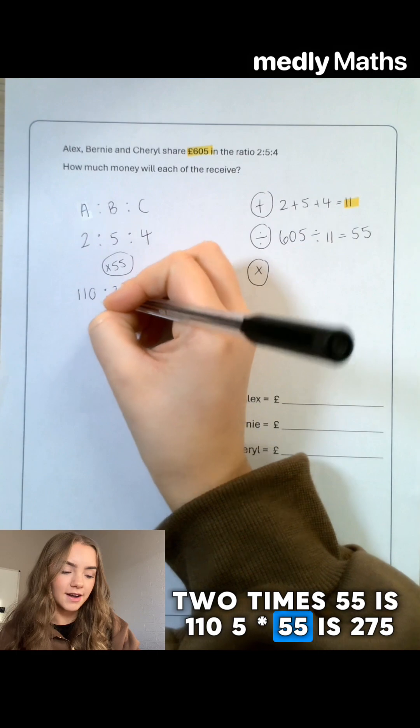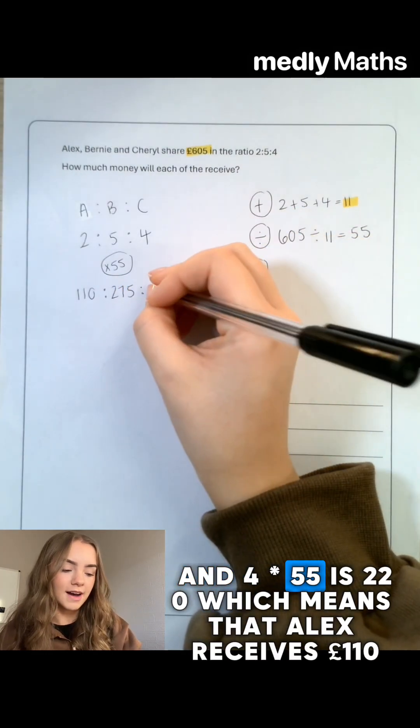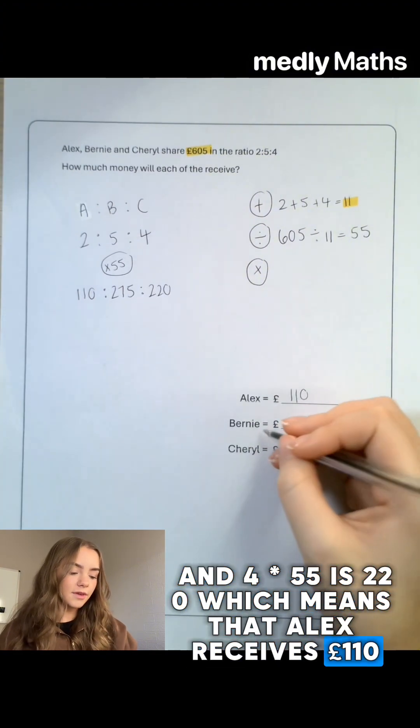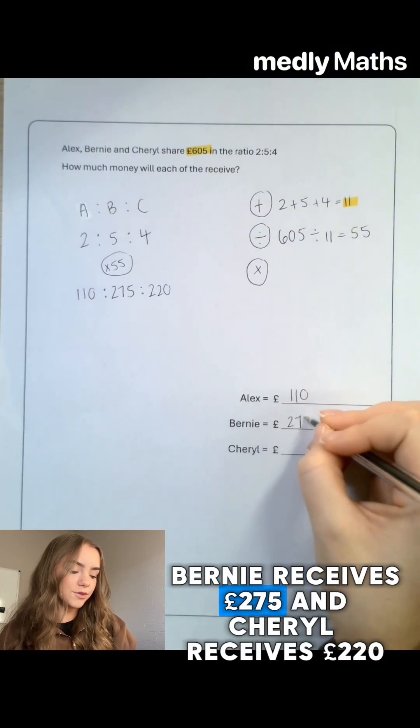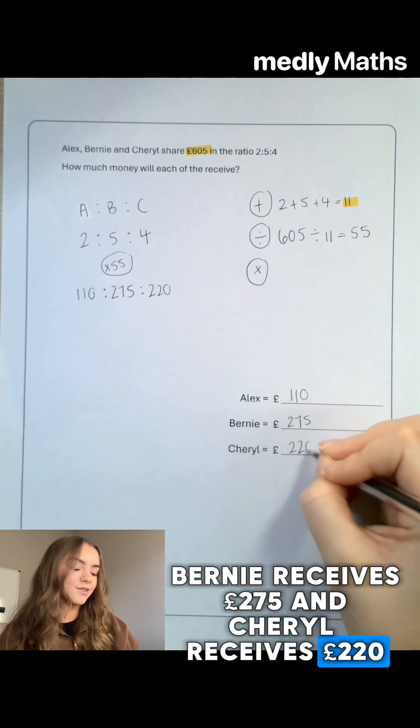5 times 55 is 275 and 4 times 55 is 220 which means that Alex receives £110, Bernie receives £275 and Cheryl receives £220.